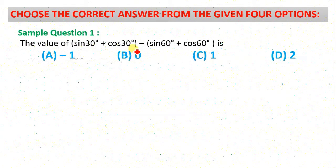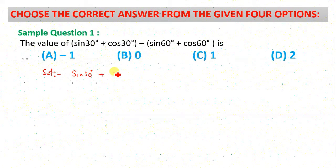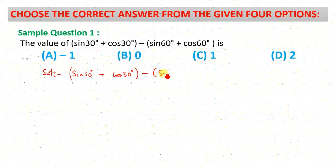Question 1: sin 30° + cos 30°, into 2. For the solution: sin 30° + cos 30° minus sin 60° plus cos 60°.